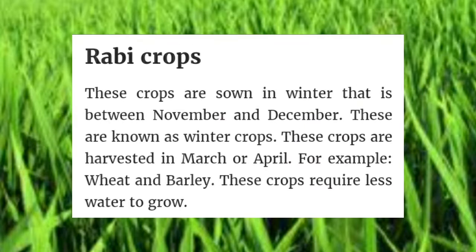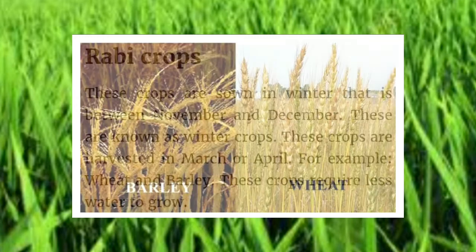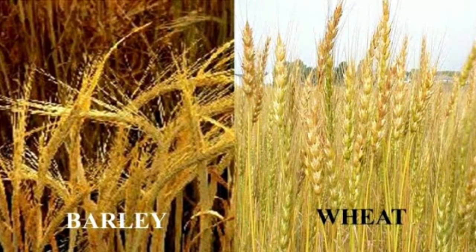What are Rabi crops? These are crops sown in winter, between November and December, and are known as winter crops. These crops are harvested in March or April. Examples include wheat and barley.